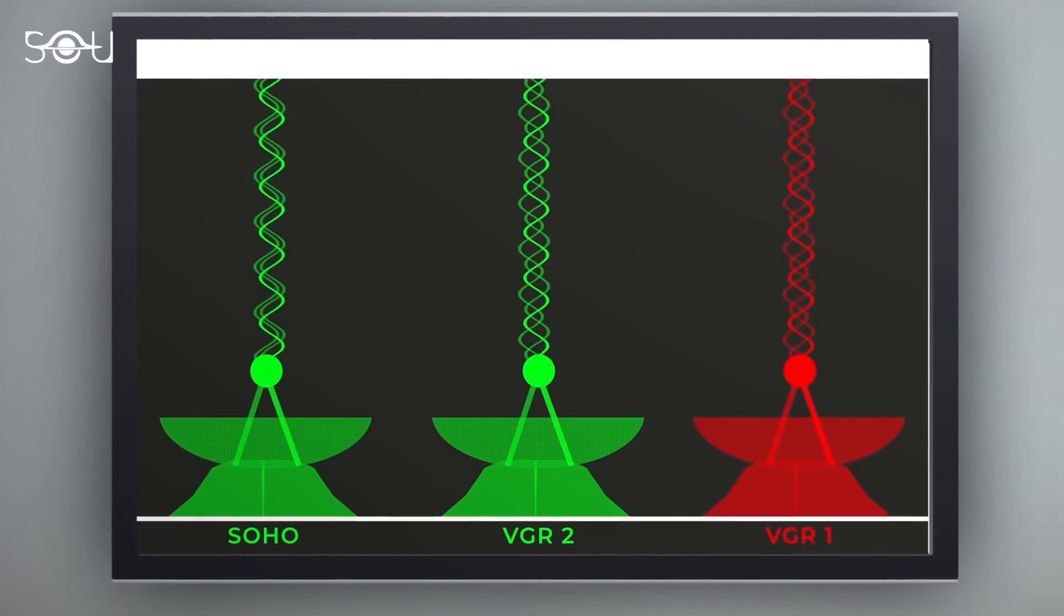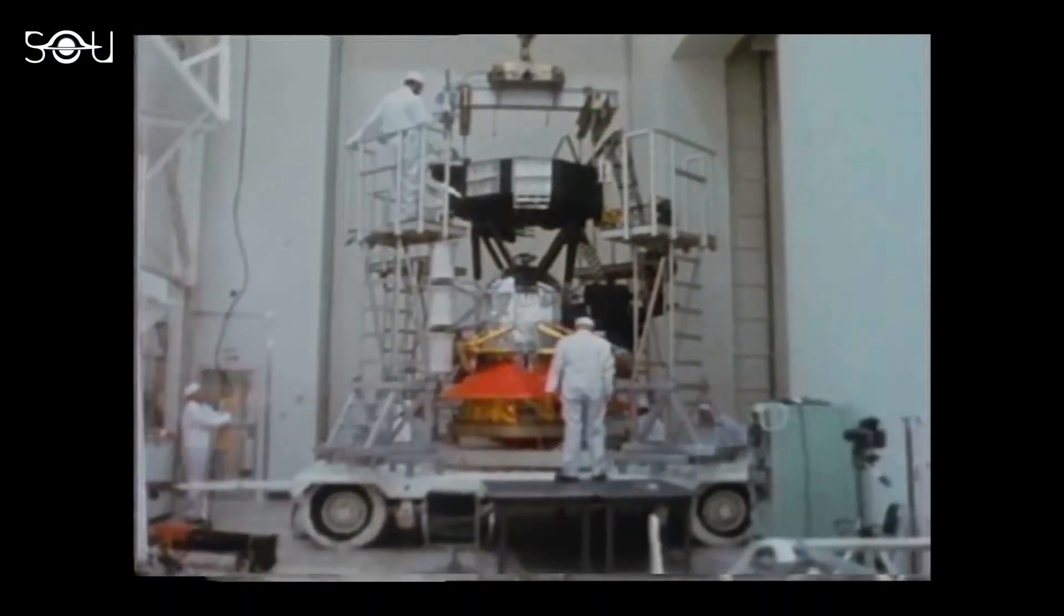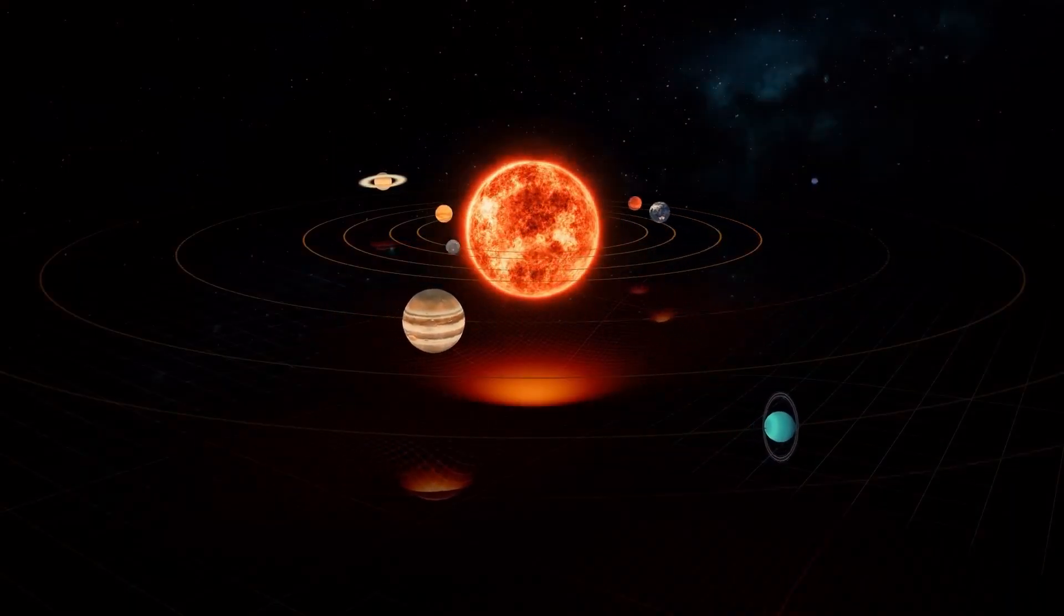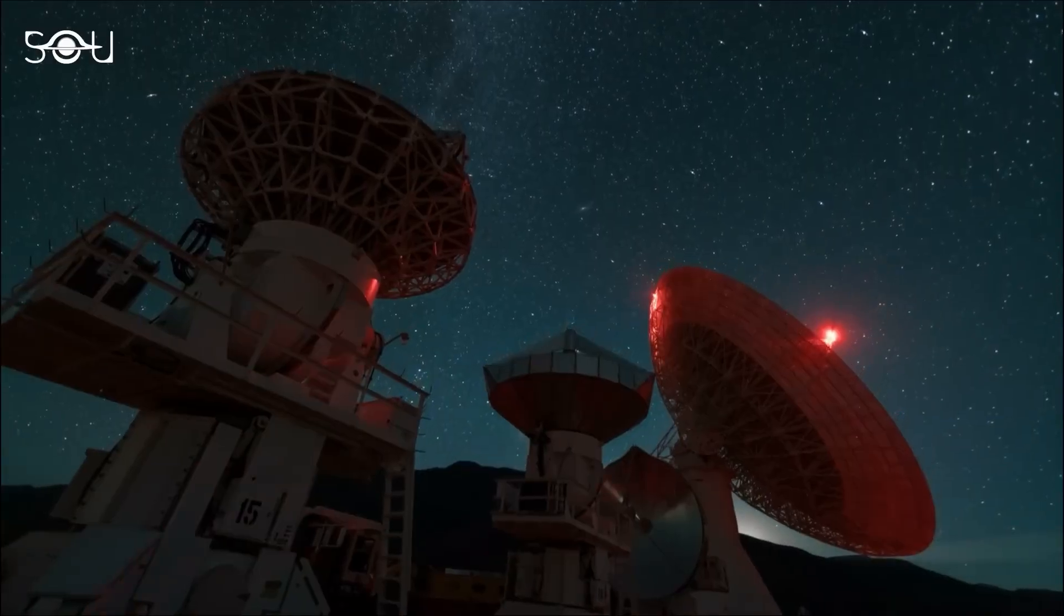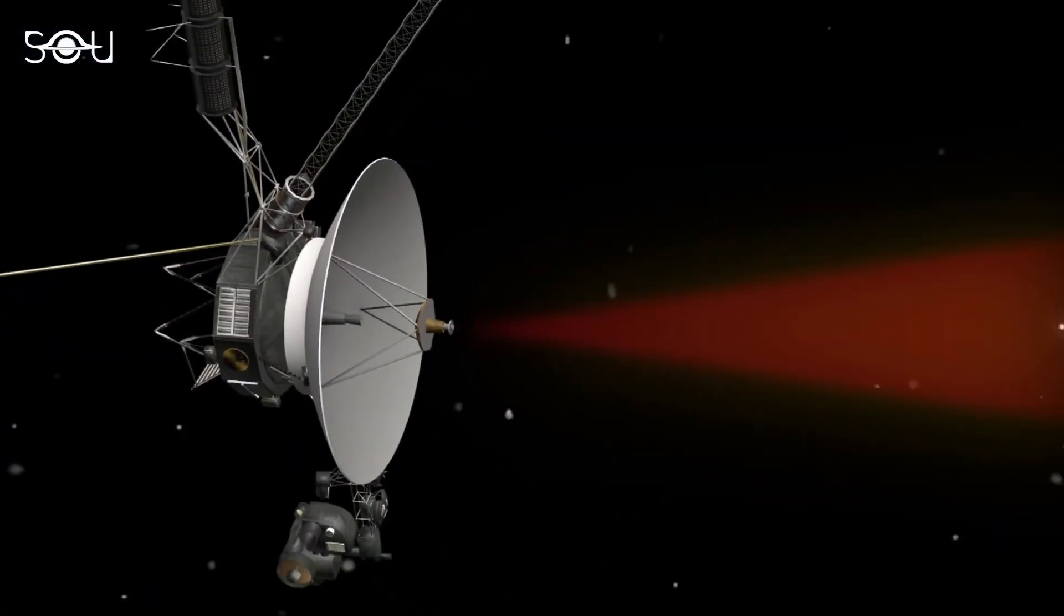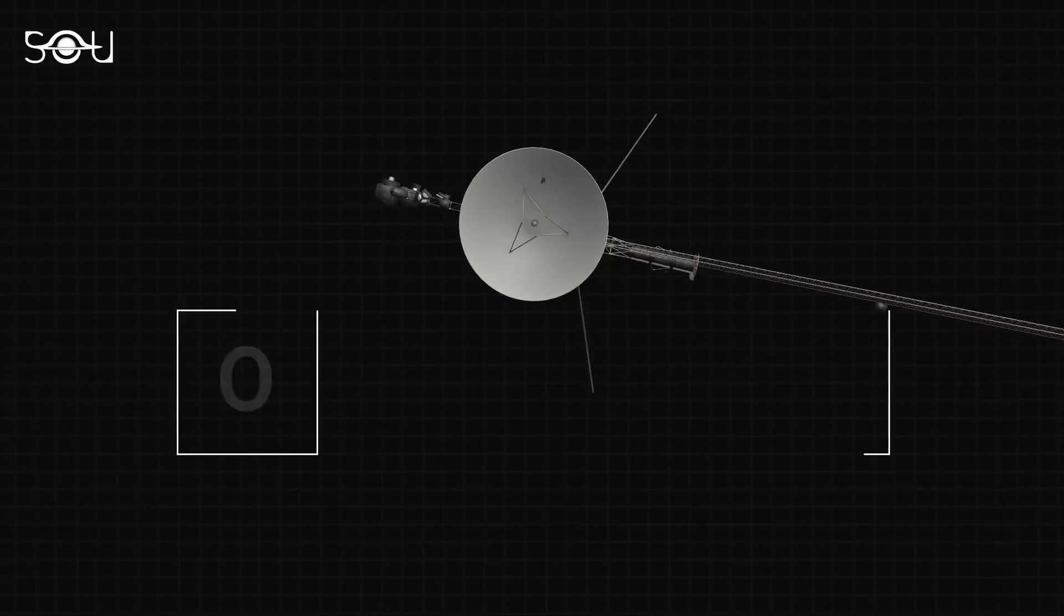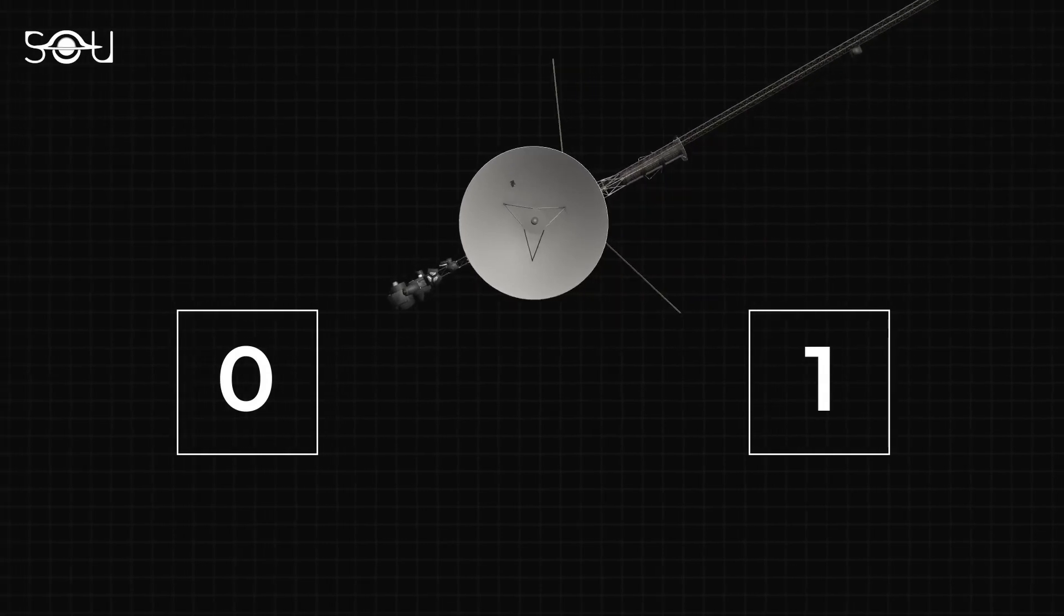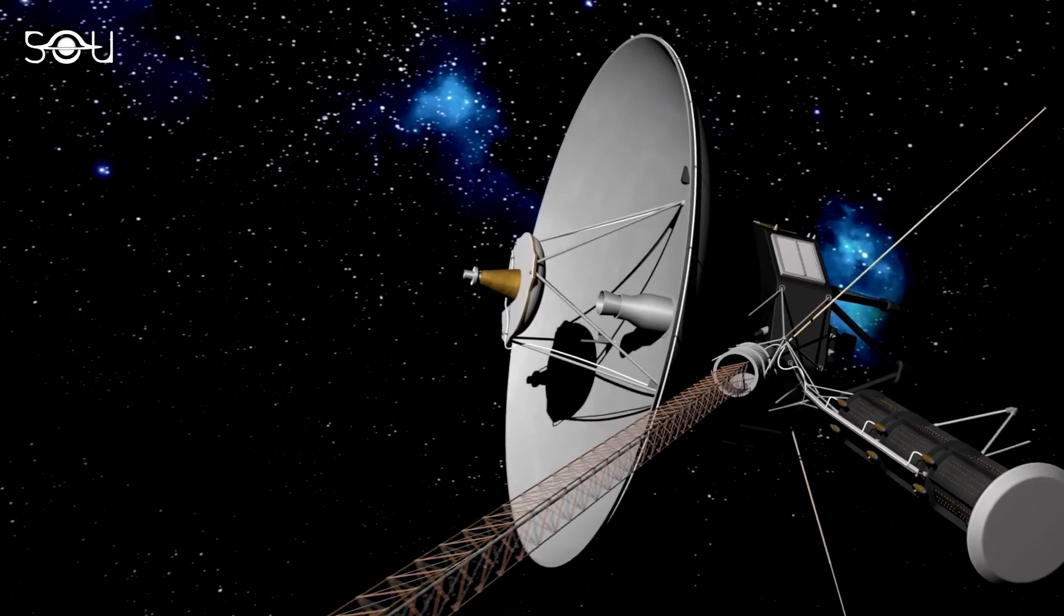Voyager 1 has been traveling through space for nearly half a century, but the last five months have been particularly stressful due to a communication glitch. NASA engineers faced two major challenges while trying to fix the problem. First, the spacecraft was built over five decades ago, so the current team had to dig deep into old documents to understand the intricacies of the probe's outdated technology. Second, Voyager 1's computers, designed in the 1970s, are far less advanced than today's technology, with a processing capacity of just 8,000 instructions per second compared to modern smartphones that handle over 100 billion instructions per second.